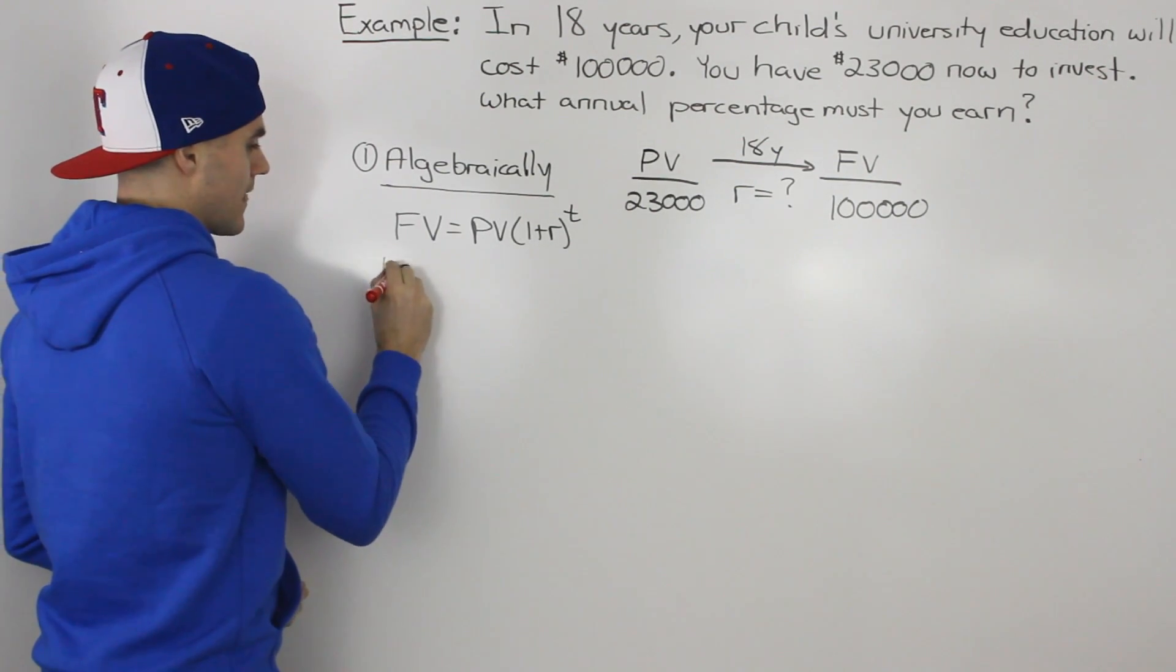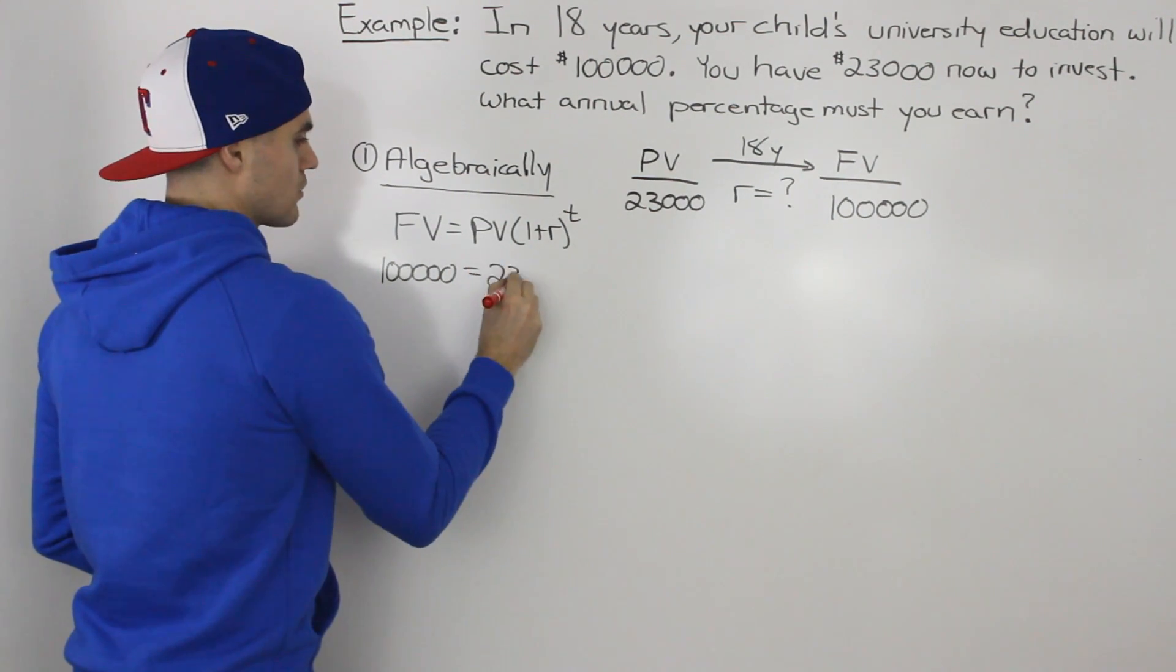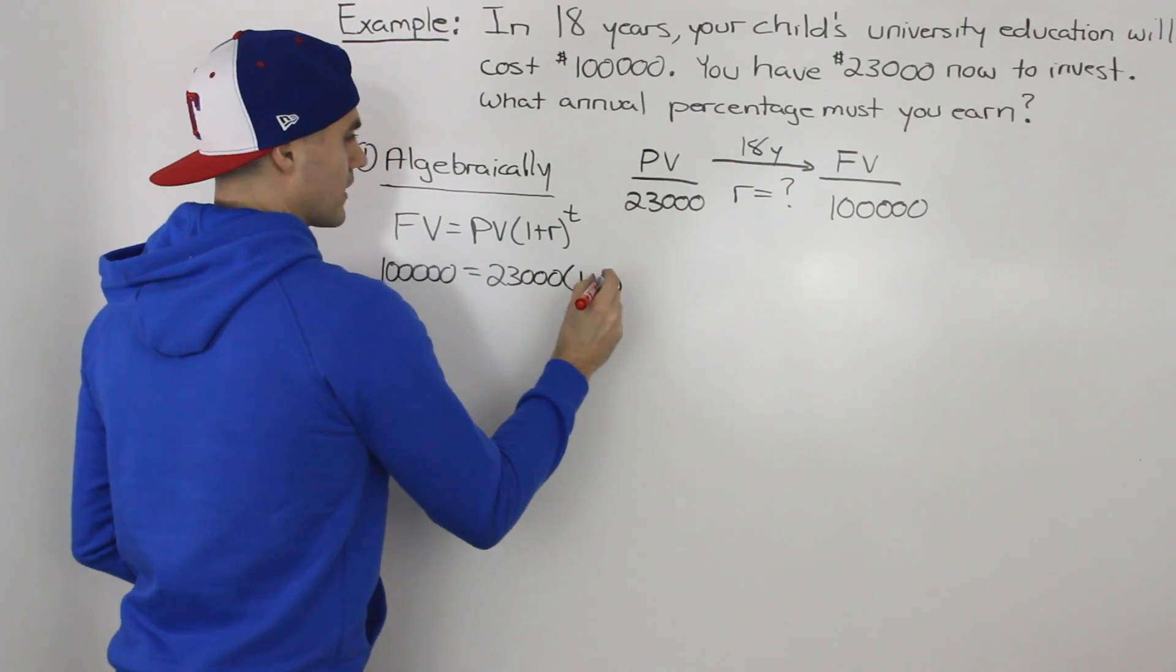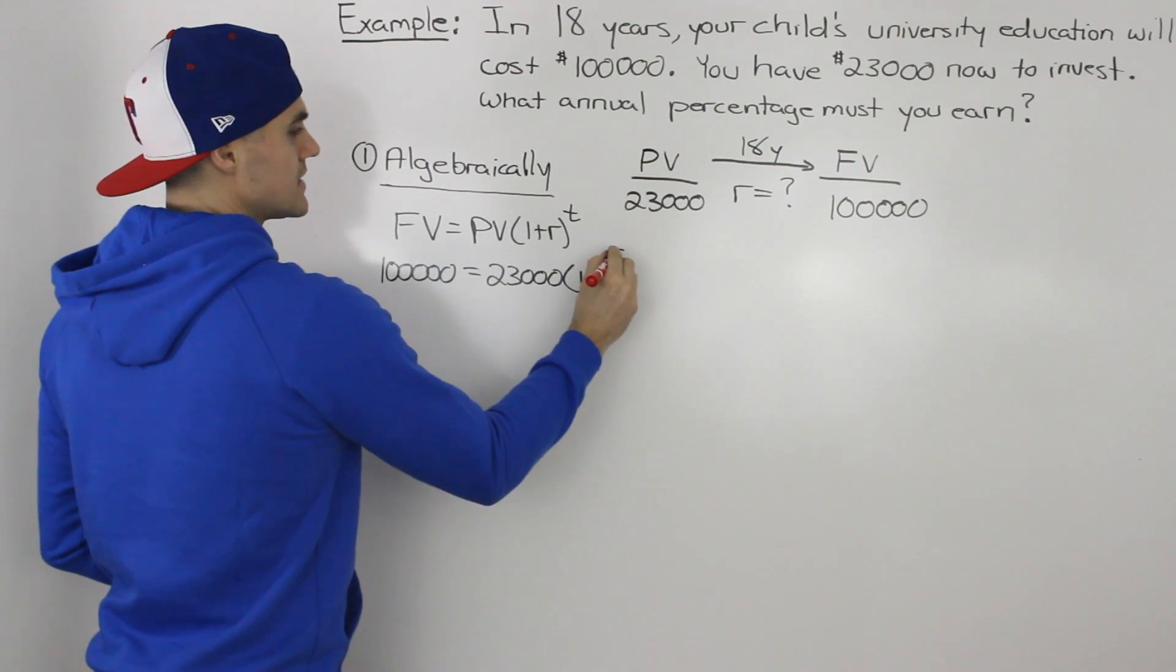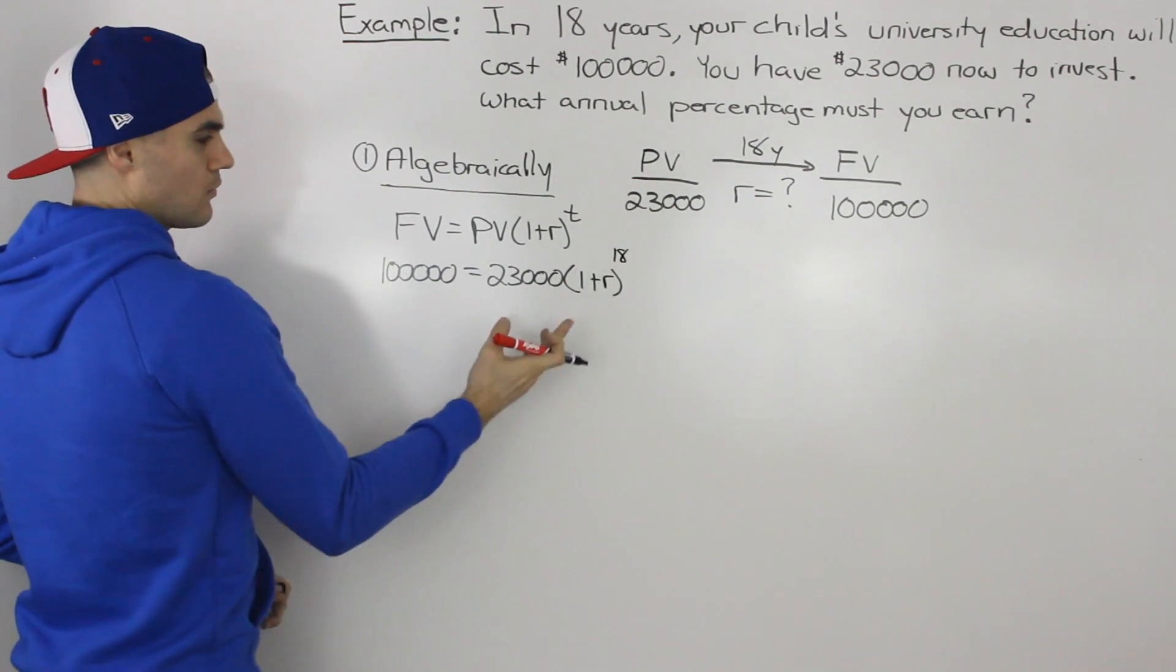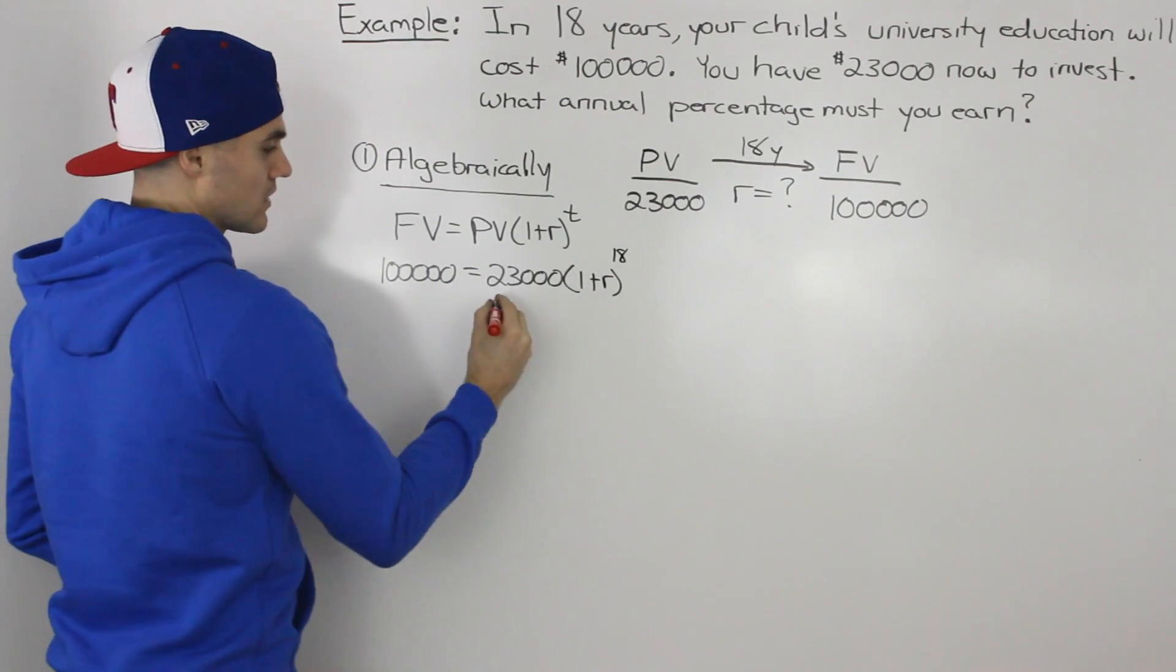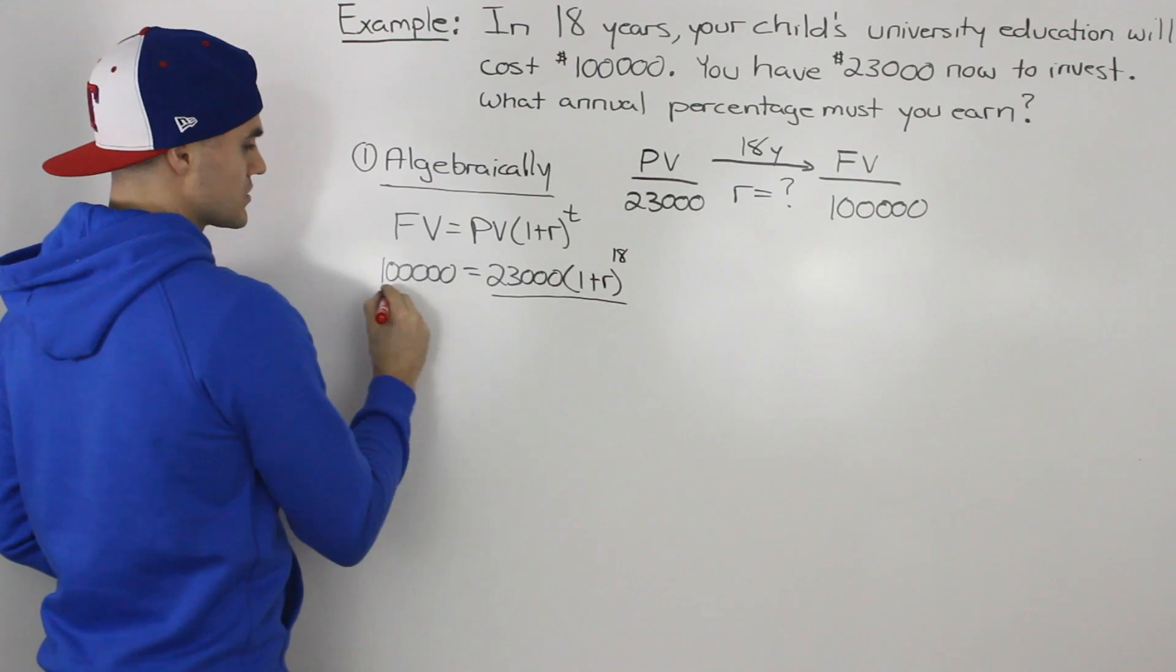Our future value is $100,000. Our present value is $23,000. Then we have 1 plus R in brackets, and our T, the number of periods, is 18. Now we have to get this R by itself, isolate for it. The first thing we would do is get rid of this $23,000 in front.